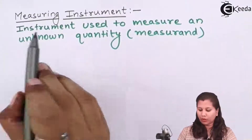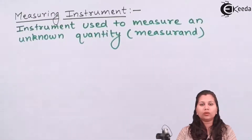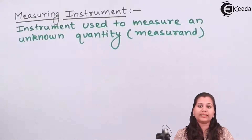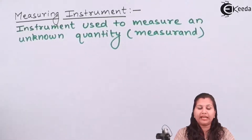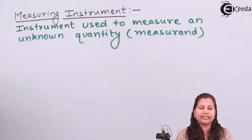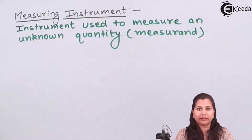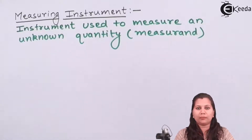This unknown quantity is also called the measurement or the measured quantity. It is very important to know about the characteristics of the measuring instrument because these characteristics reflect the performance of the instrument. If the characteristics of the instrument are very good, then we can say that the overall performance of the instrument is very good and it will correctly and accurately measure the unknown quantity.